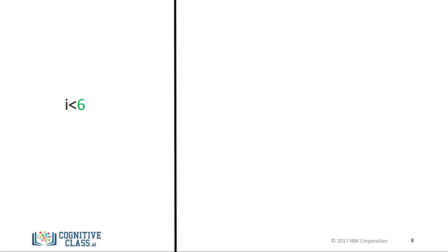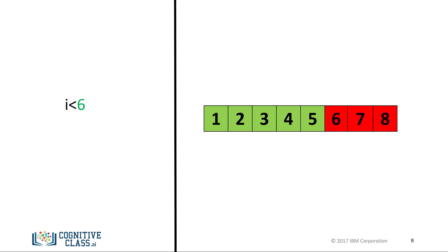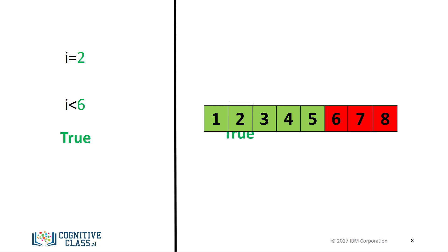We can change the inequality. If the value of the left operand, in this case i, is less than the value of the right operand, in this case 6, then the condition becomes true. Again, we can represent this with a colored number line. The areas where the inequality is true are marked in green, and red where the inequality is false. If the value for i is set to 2, the result is true, as 2 is less than 6.